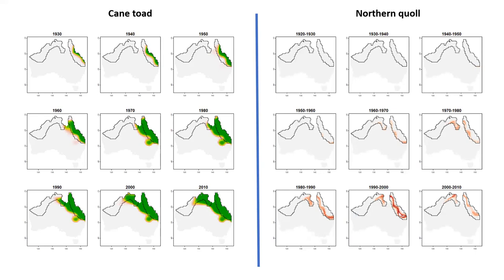Looking at the spatial dynamics between cane toad and quoll range shifts: the quoll populations collapsed from the edge of the range in towards the coast, which is the opposite of what cane toads were doing—expanding out from coastal areas. Around the 1960s, just as cane toads started hitting the quoll range boundary, quoll populations began to collapse at the range edge and then collapse inward. Quoll populations along the coast exposed to cane toads for a prior period haven't shown range collapse, but populations at the range edge collapse almost as soon as cane toads arrive.